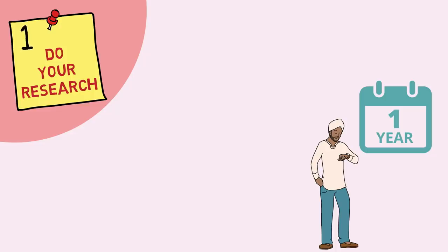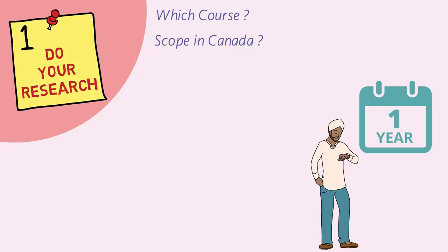While doing your research, consider these points. Number one: which course? You should be pretty sure about the course you want to pursue. You'll be required to finalize a specific major when applying to study in Canada. The Canadian academic setup is quite flexible towards switching courses, although it is best to compare your options beforehand and choose a major you truly are interested in. Also make a note of its scope in Canada — think about job opportunities and what kind of package you can get after completing your studies.